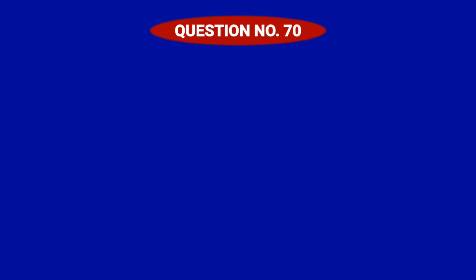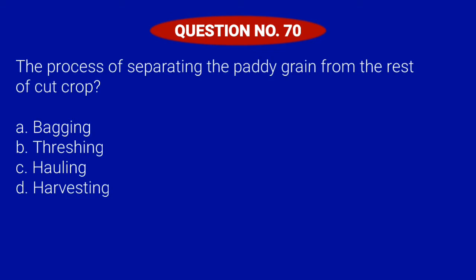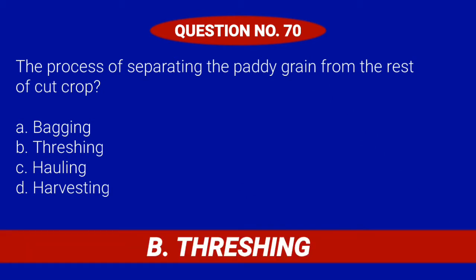Question number 70. The process of separating the paddy grain from the rest of the cut crop. Letter A: Bagging. Letter B: Threshing. Letter C: Hauling. Or Letter D: Harvesting. Correct answer is Letter B: Threshing.